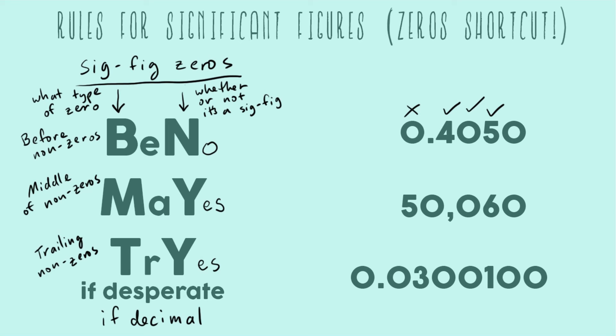And now we have this zero at the very end. And so that's try if desperate. Yes there is a decimal point right here. Doesn't matter where the decimal is. If it's there at all then it means that yes this will be a sig fig.